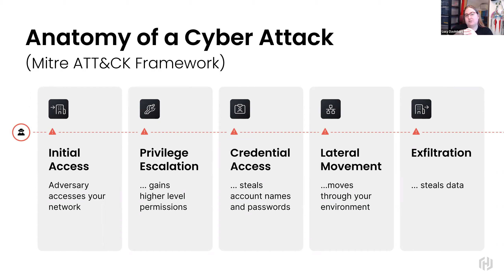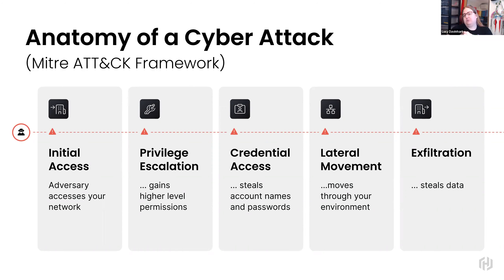Once they're inside the network, an attacker is going to try to escalate their permissions in order to access as many systems or repositories as possible. They'll then scan the network for any files containing secrets, passwords, API keys — anything that could allow them access to sensitive data. They'll move laterally across the network until they find sensitive data, and they can finally exfiltrate it and do whatever nefarious deeds they wish.